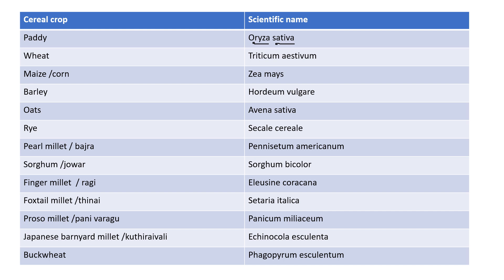The first scientific name is for rice: Oryza sativa. Next is wheat. Wheat has classifications — durum wheat is one type. The most common wheat's scientific name is Triticum aestivum.